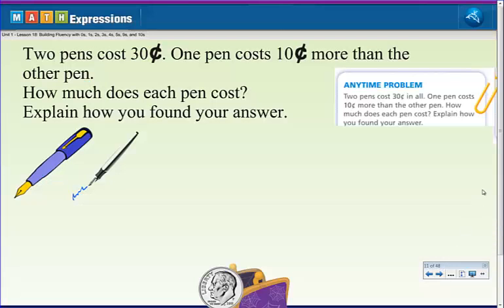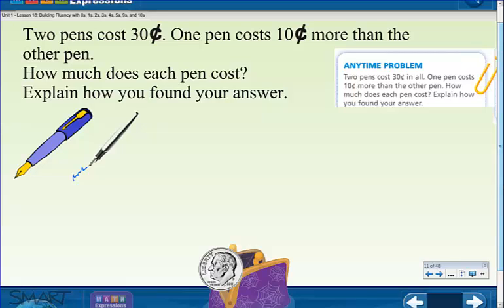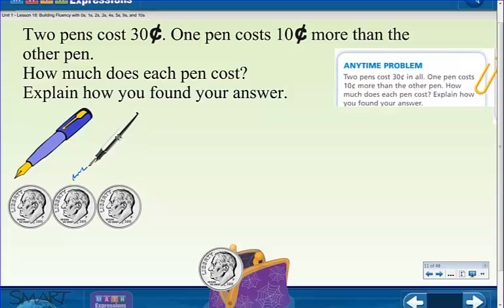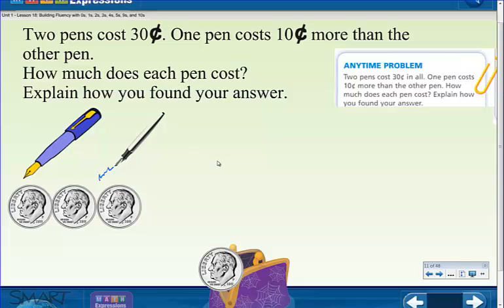Here's our first problem. So this is problem number one. Two pens cost thirty cents. One pen costs ten cents more than the other pen. How much does each pen cost? So we've got thirty cents total, and we've got two pens. You need to explain how you found your answer to the rest of your group. And make sure you draw a picture of at least the dimes so you can show where you divided them up.